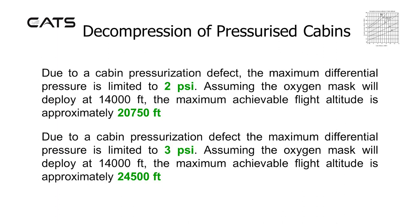Due to a cabin pressurisation defect, the maximum differential pressure is limited to 2,000 feet. Using that same graph, and assuming the oxygen mask will deploy at 14,000 feet, the maximum achievable flight altitude is approximately 20,000 to 21,000 feet.